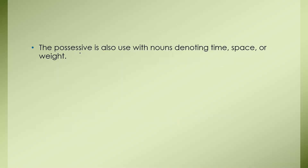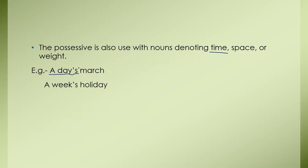The possessive is also used with nouns denoting time, space, or rate. Example: 'a day's march' — here the word 'day' is a non-living thing, but as it denotes time, we are using apostrophe S with it. Another example: 'a week's holiday'.